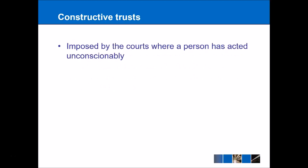Finally, we have constructive trusts. I won't go into too much detail here, but they are essentially imposed by the courts where a person has acted unconscionably. For example, if you are paid £1,000 a month by your company and through an administrative error they pay you £10,000 instead, then as soon as you realise the mistake you become a trustee with an obligation to go to the company and say you have been overpaid by £9,000 and return that money. We can see how the trust relationship can be used by the courts to deal with unusual situations like that.